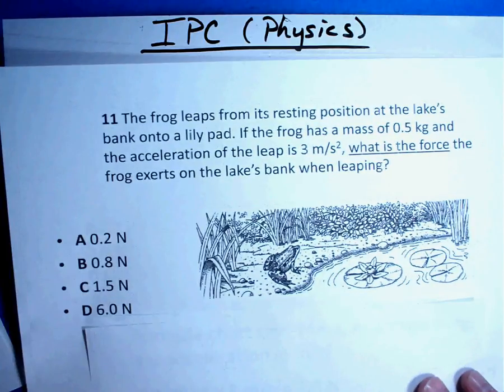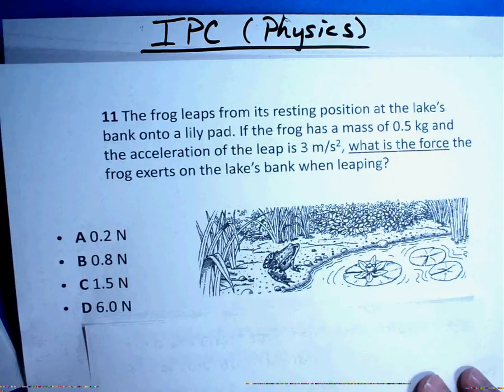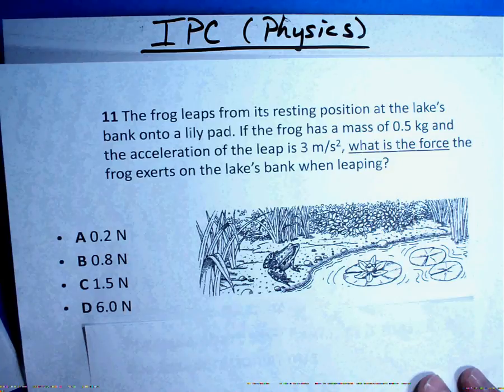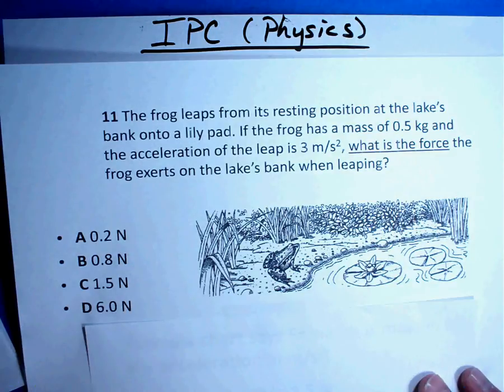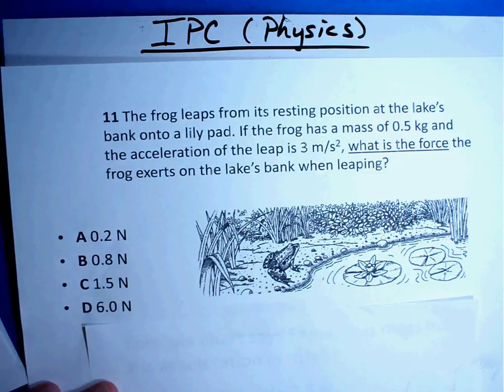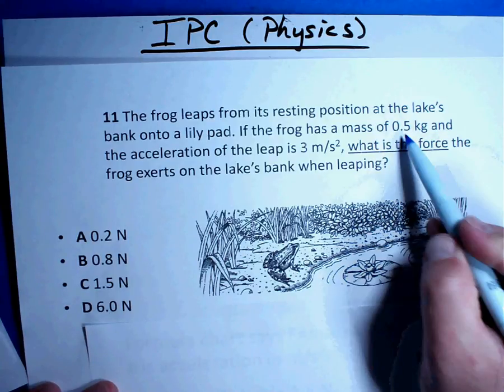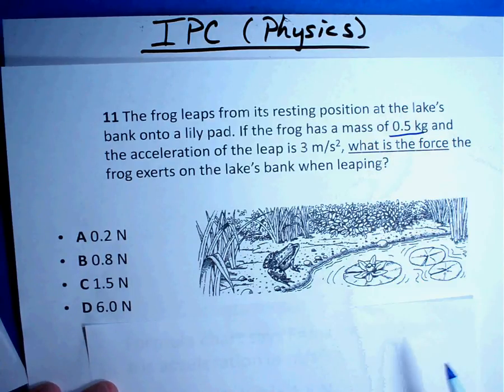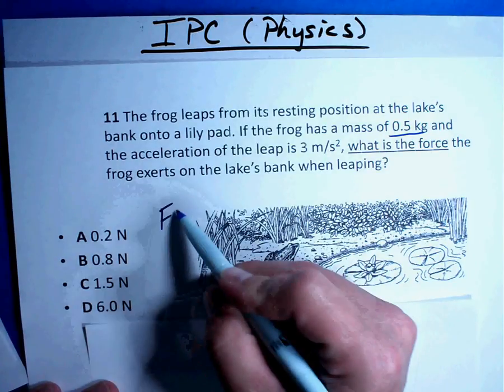Here's an example of a question that I found that was on a TAKS test. We'll look at the answer in a second. Go ahead and pause the video and see if you can answer it using this formula. Alright, let's see what they tell us. Frog leaps from its resting position at the lake's bank onto a lily pad. The frog has a mass of 0.5 kilograms. Alright, well, let's go ahead and use this formula.